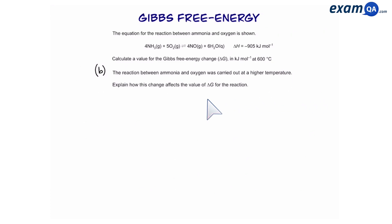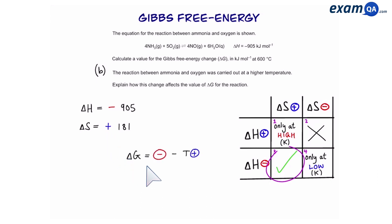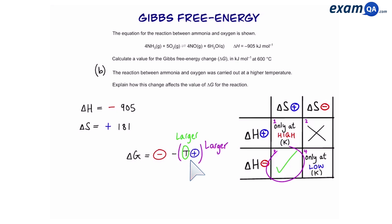Going back to the question, we can use our table. We know that the reaction falls under the category where delta H is negative and delta S is positive — category three. So delta G equals negative take away positive. The temperature has increased as mentioned in the question, so T delta S becomes larger, meaning we have negative take away a larger number — therefore delta G becomes more negative.